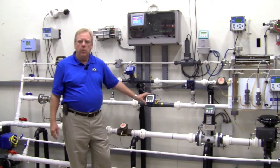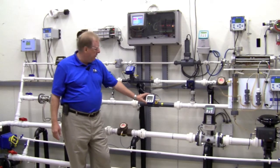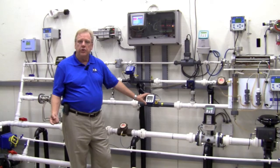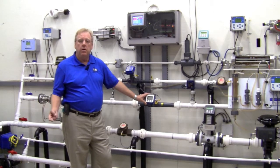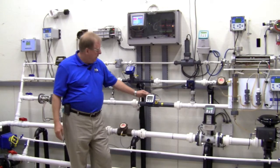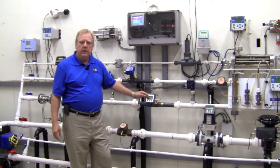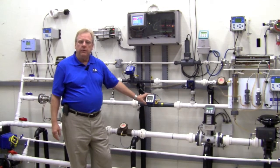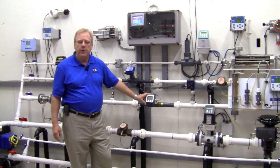The FT420 is a common display that is used between our insertion paddle wheel flow meters, our turbine flow meters, and our insertion mag meters. It will display both rate and total, and will give you a 4 to 20 milliamp and pulse output.